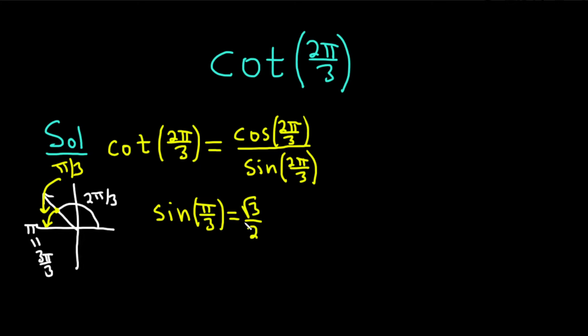So we have to think about, is the sine of 2 pi over 3 positive or is it negative? Well, if we think about the unit circle, on the unit circle, every ordered pair is of the form cosine theta comma sine theta.